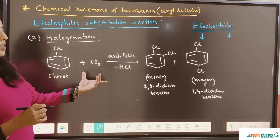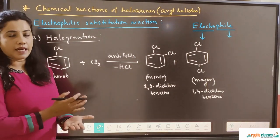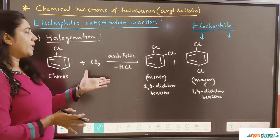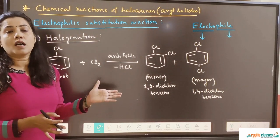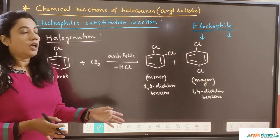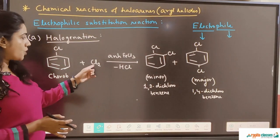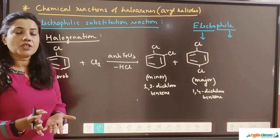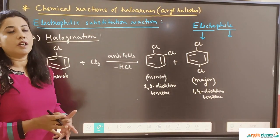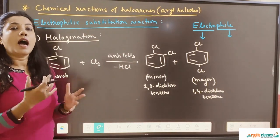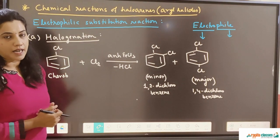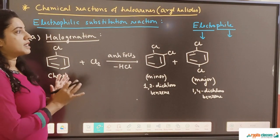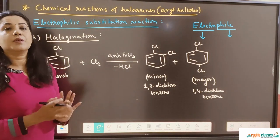This reaction where chlorine gets attached to the benzene ring is called chlorination. If we use bromine instead of chlorine, it is called bromination. Similarly, when iodine gets attached to the ring it is called iodination. Together these are all examples of halogenation.